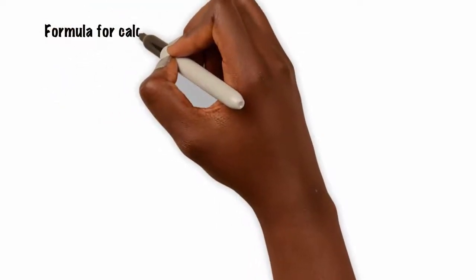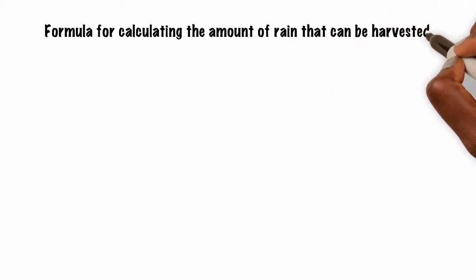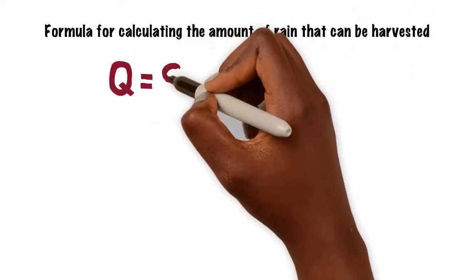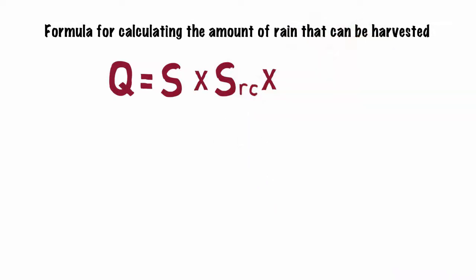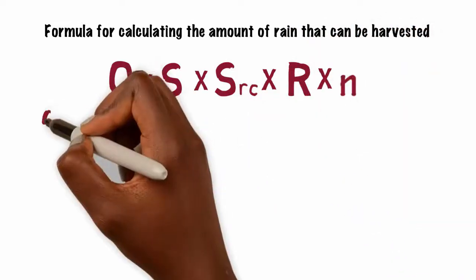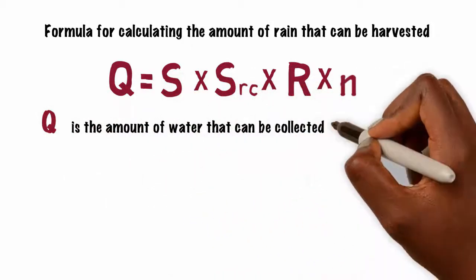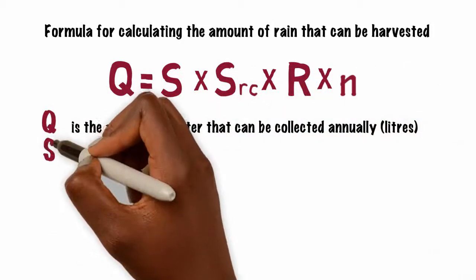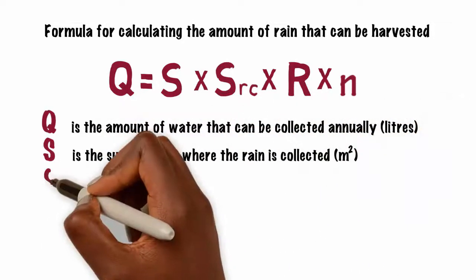The simple formula for calculating the amount of rain that can be harvested in an effective area is Q equals S times S subscript rc times R times n, where Q is the amount of water that can be collected annually in liters, and S is the surface area where the rain is collected in meter squared.